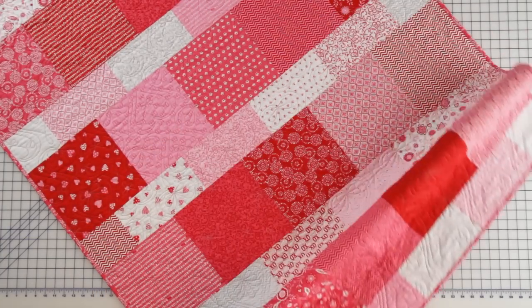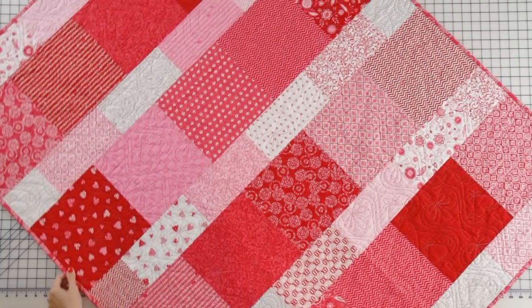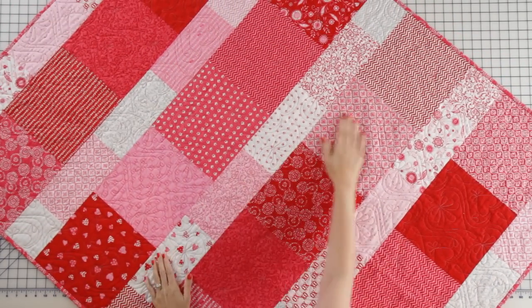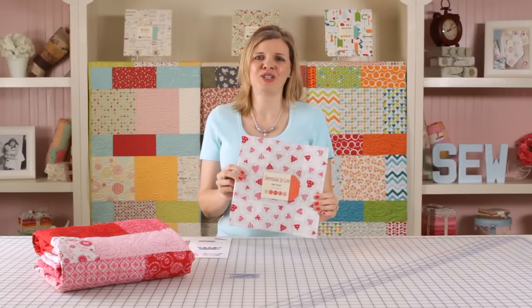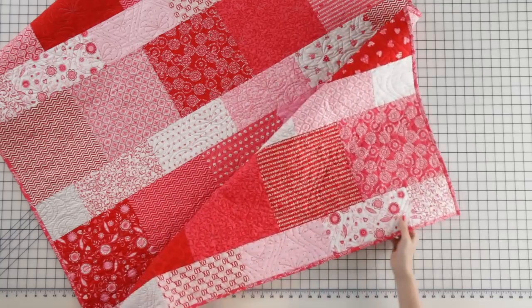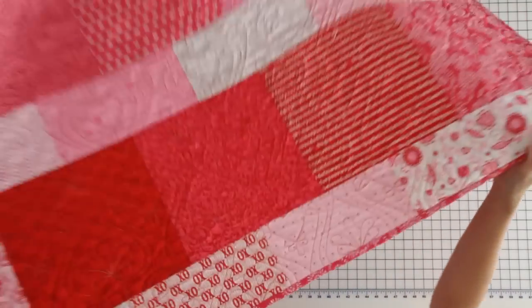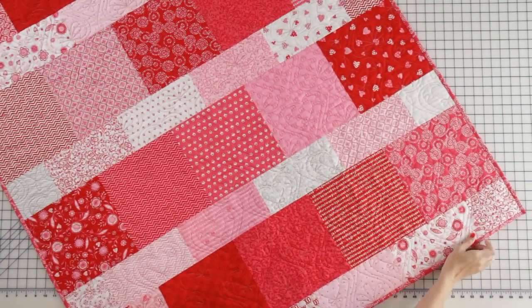Our pattern today is called the Layer Cake Lemonade, and this pattern uses one Moda Layer Cake. A Moda Layer Cake includes 42 10-inch squares, and from one Moda Layer Cake you can get one 48 by 61-inch quilt.